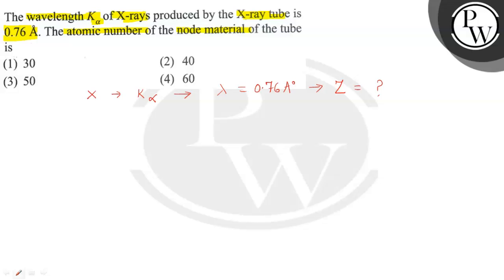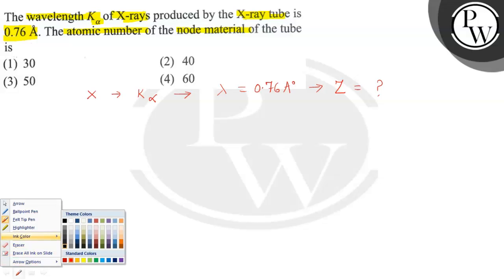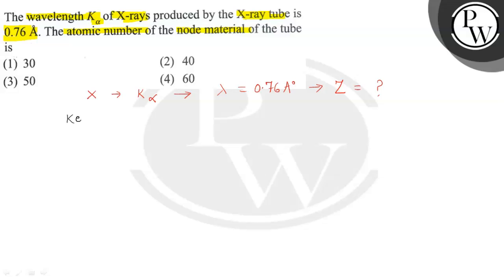So the concept for this question is that when we talk about the wavelength of K-alpha, we have the reciprocal of wavelength is equal to Rydberg's constant multiplied by atomic number minus 1 whole square.